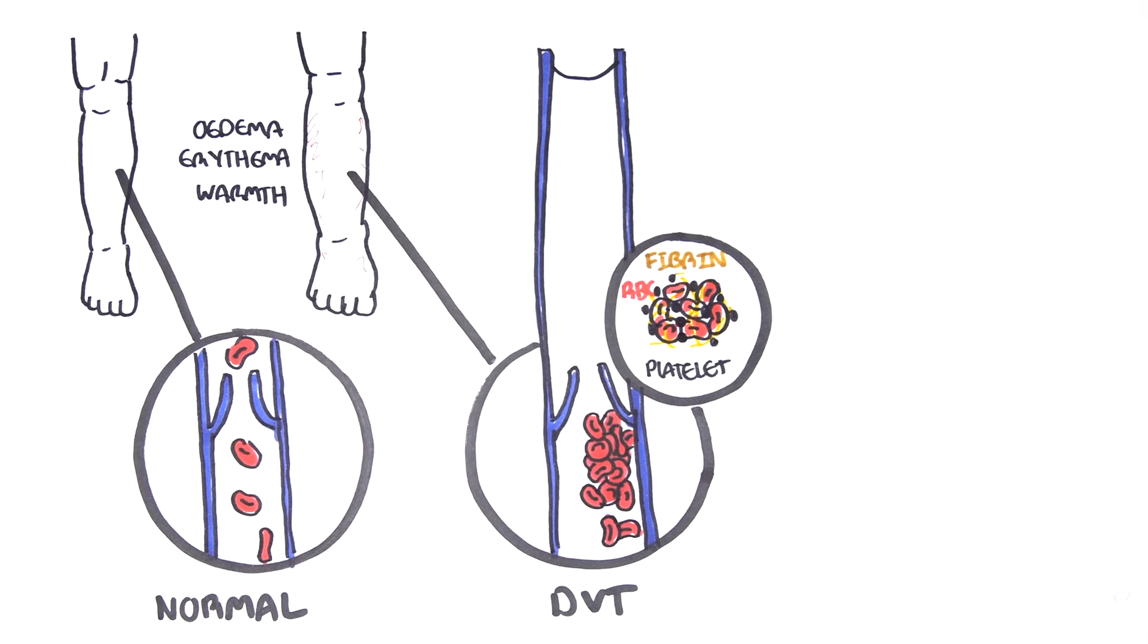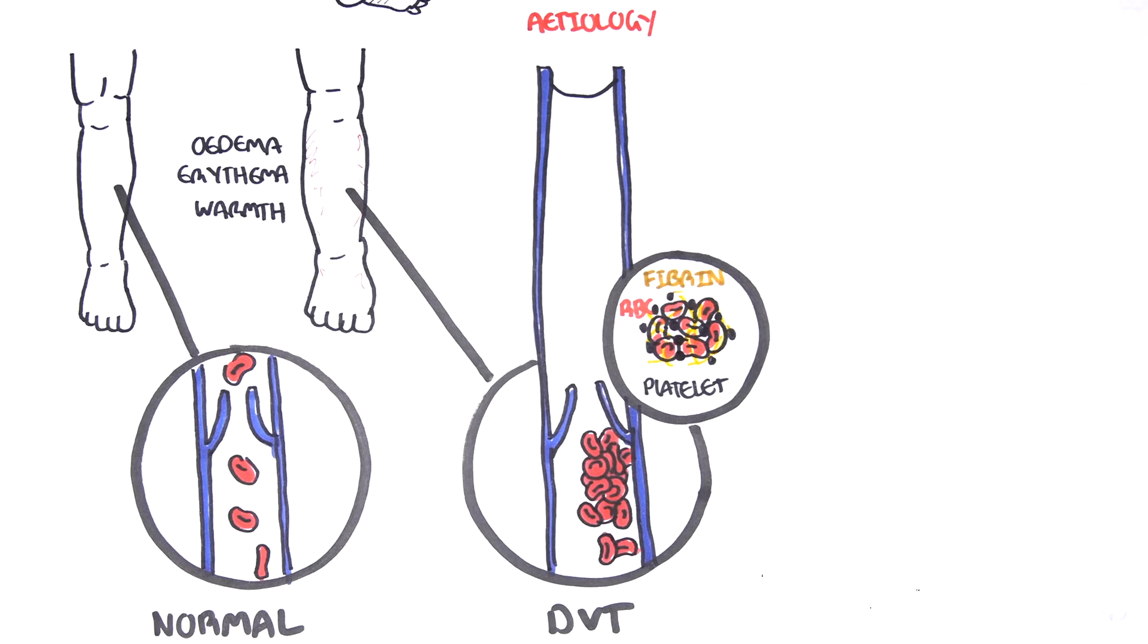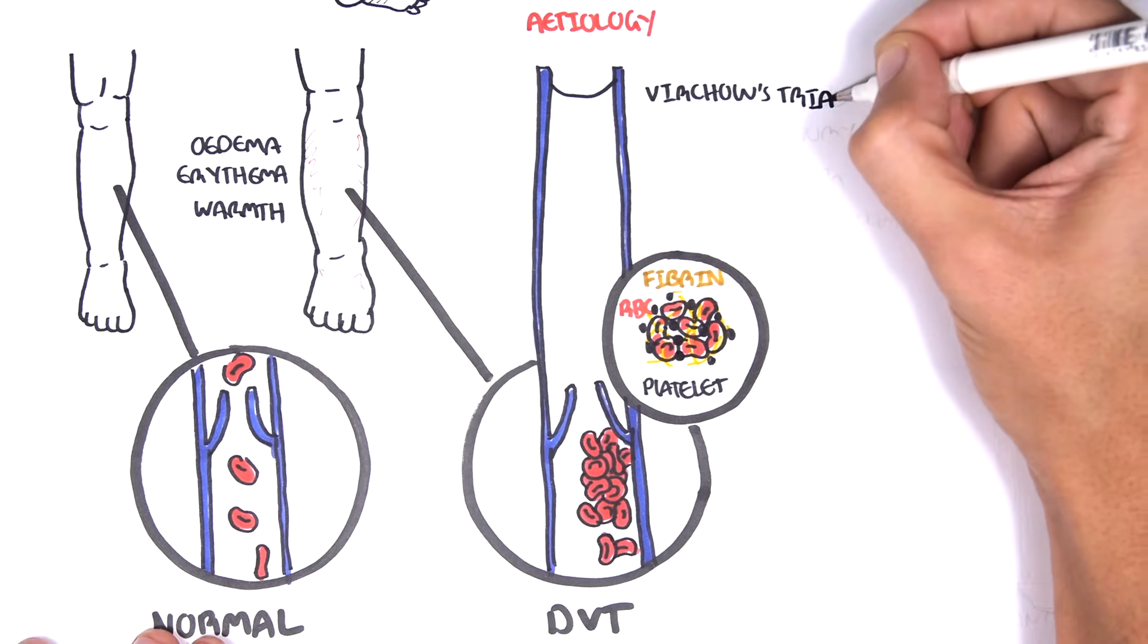They all clump together via coagulation cascade and forms what's known as a thrombus. There are many causes of deep vein thrombosis or thrombus formation, but it can all be condensed to three things.